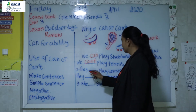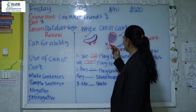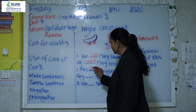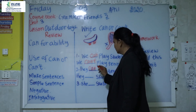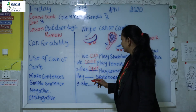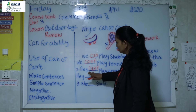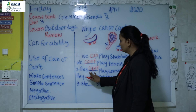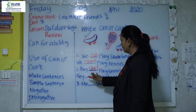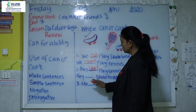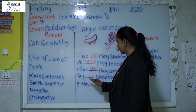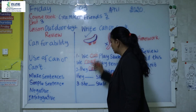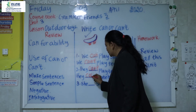The second sentence is: 'They cannot play tennis.' So we use 'can't' here. This sentence has two parts. The first part tells us they can't play tennis, and the second part tells us they can play skateboard — we see the tick, so we use 'can'.